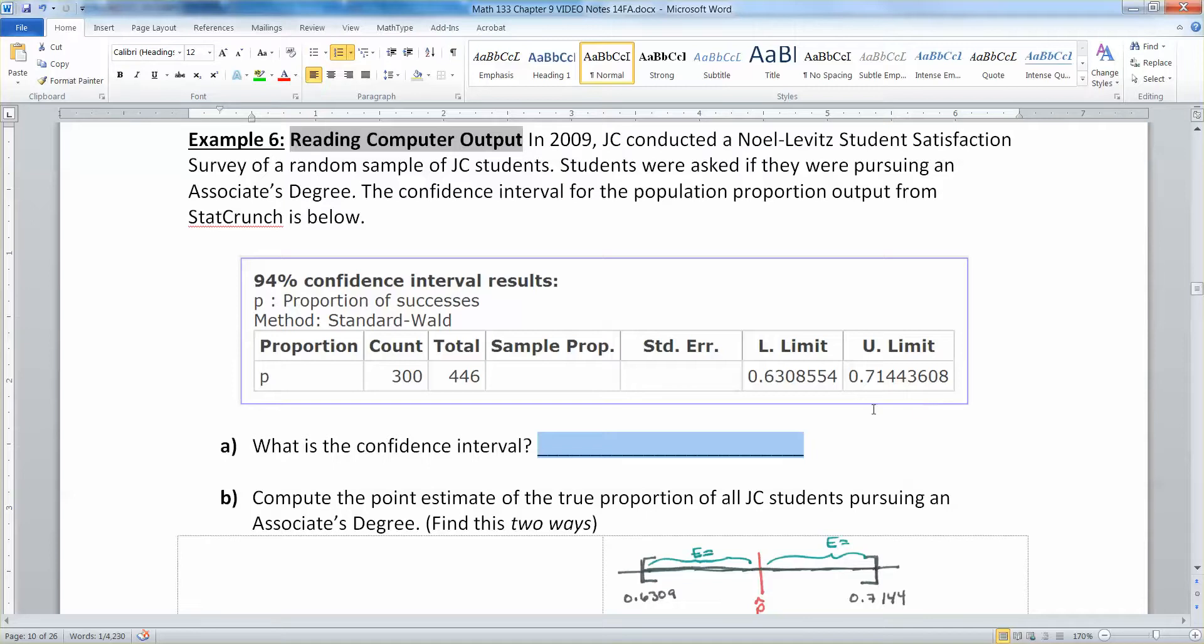The confidence interval is this part over here, which is 0.6308554 to 0.71443608. In general, we don't probably bother with that many decimal places. We'll probably round to four decimal places or so. I have them both in green, so you can see that.